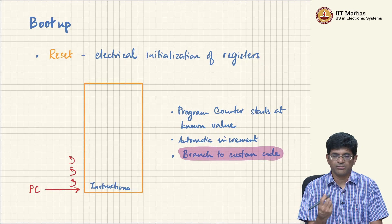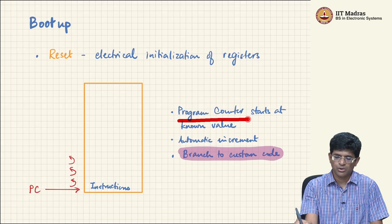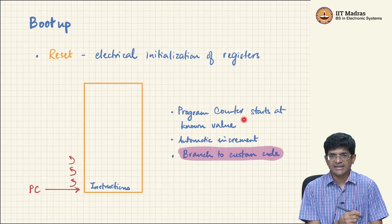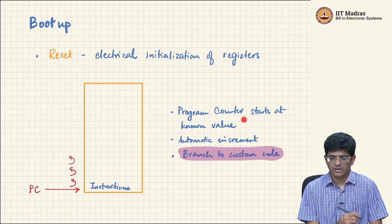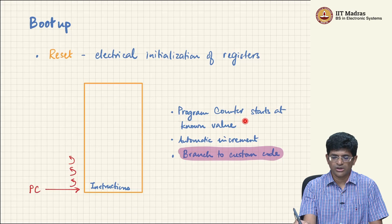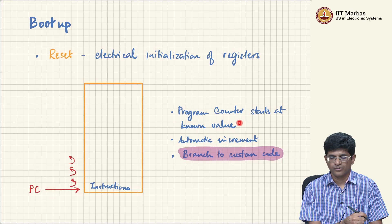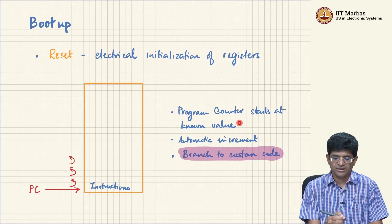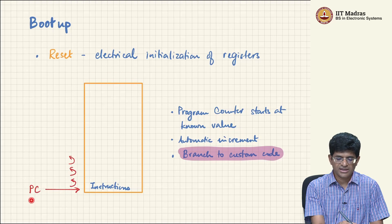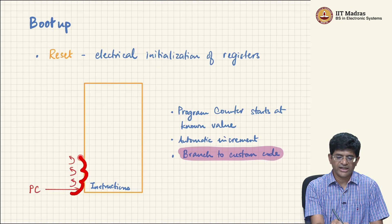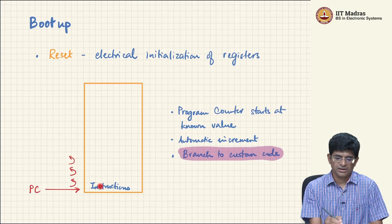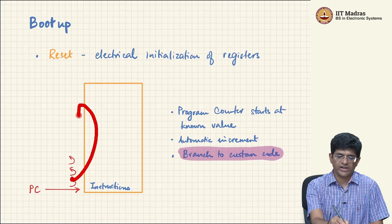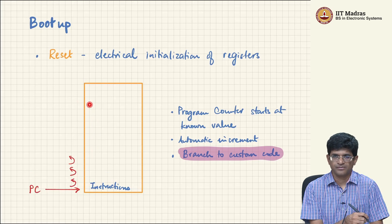One of the most important registers inside a microprocessor is called the PC, or the program counter. One of the main things you need to do at reset or power-on is make sure the program counter starts from a known value. The basic functioning of the CPU means the program counter will automatically increment on every clock cycle, unless the instruction fetched is explicitly telling it to go somewhere else — in which case there would be a branch.